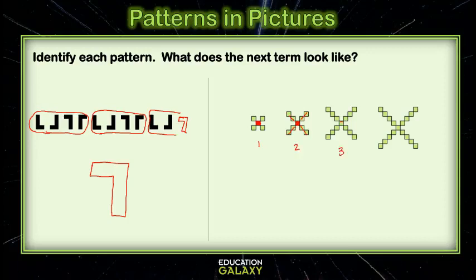Third term has that same middle square, and then three squares on each of the corners. And the fourth one has four squares on each of the corners. So if I'm looking for the fifth term,